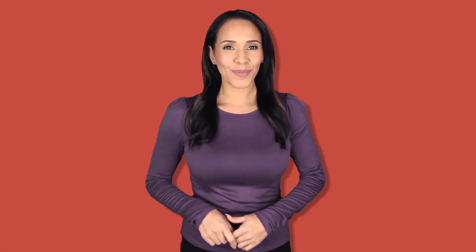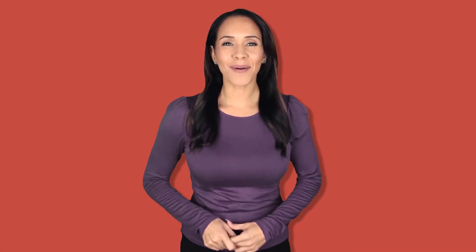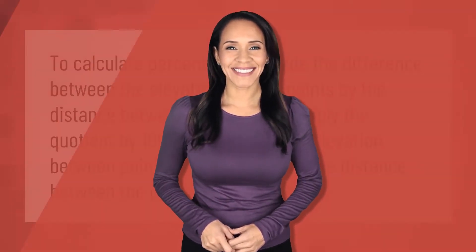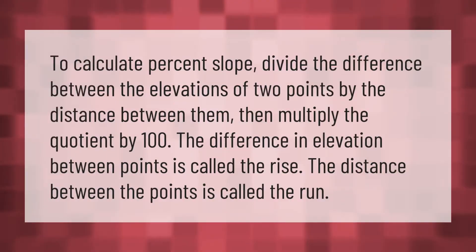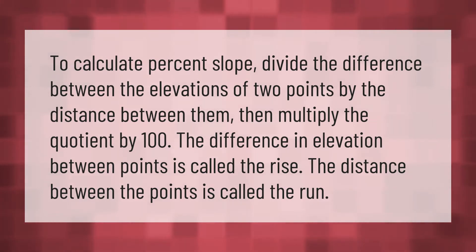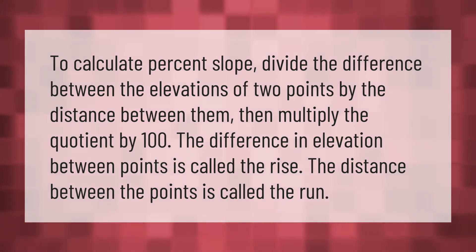To calculate percent slope, divide the difference between the elevations of two points by the distance between them, then multiply the quotient by 100.